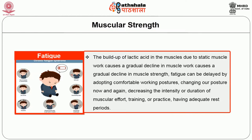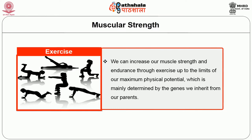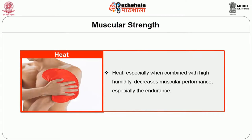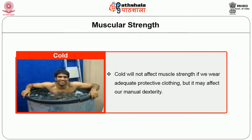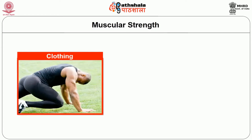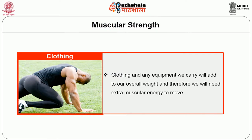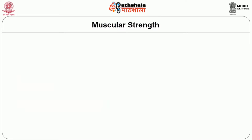Fatigue: the buildup of lactic acid in muscles due to static muscle work causes a gradual decline in muscle strength. Fatigue can be delayed by adopting comfortable working postures, changing posture regularly, decreasing the intensity or duration of muscular effort, and training or practice. Exercise: we can increase muscle strength and endurance through exercise up to the limits of our maximum physical potential, which is mainly determined by inherited genes. Heat, especially combined with high humidity, decreases muscular performance and endurance. Cold will not affect muscle strength if adequate protective clothing is worn, but it can affect manual dexterity.